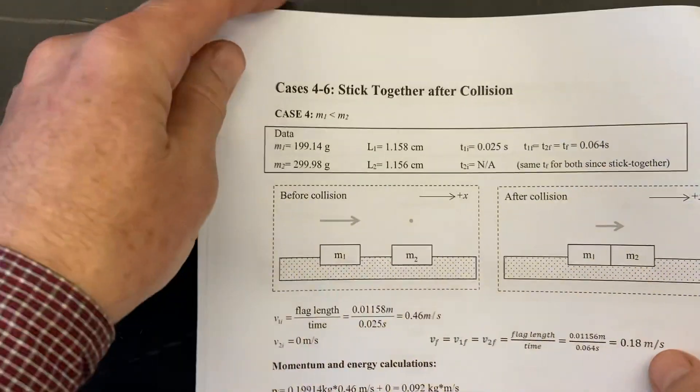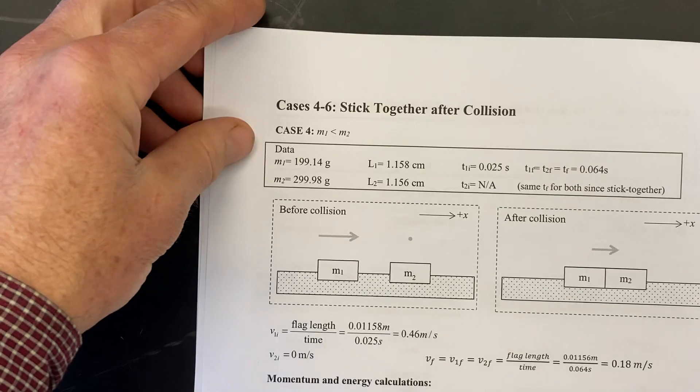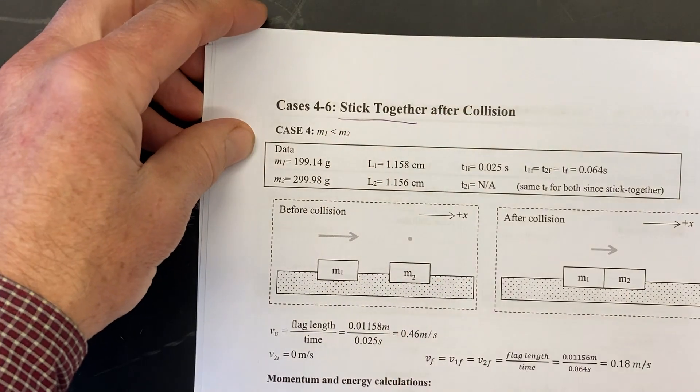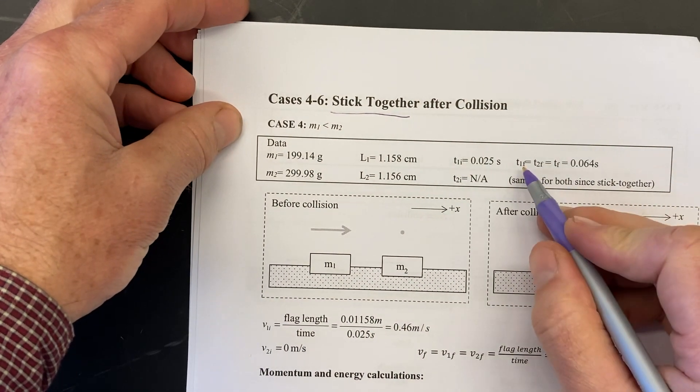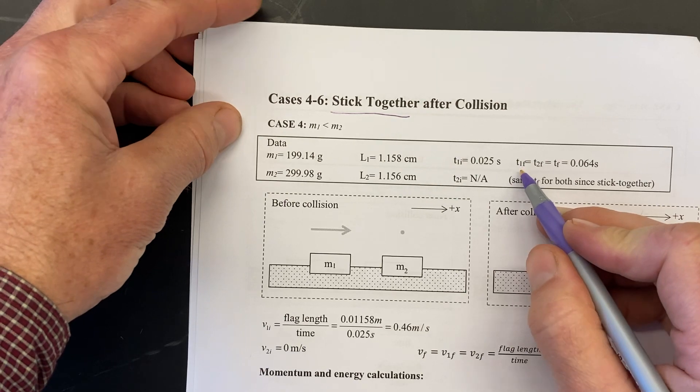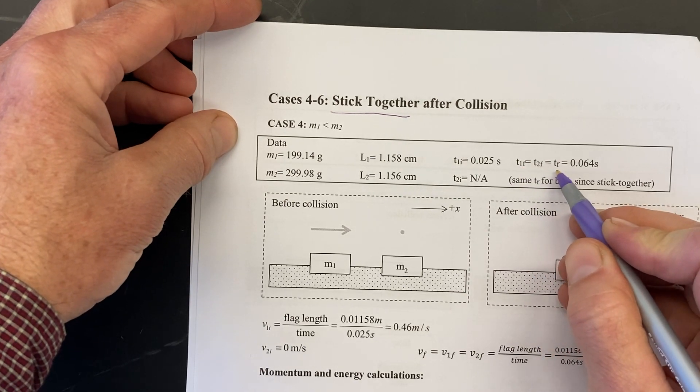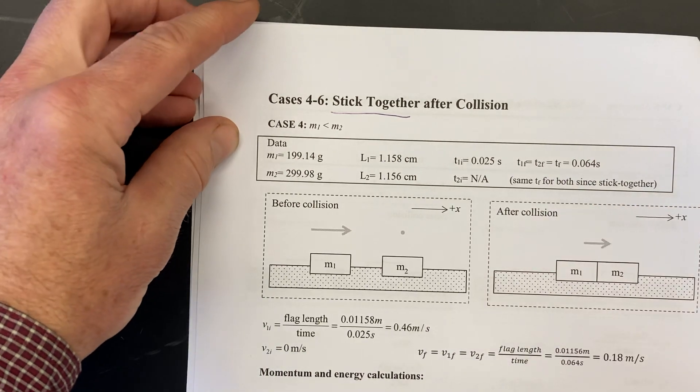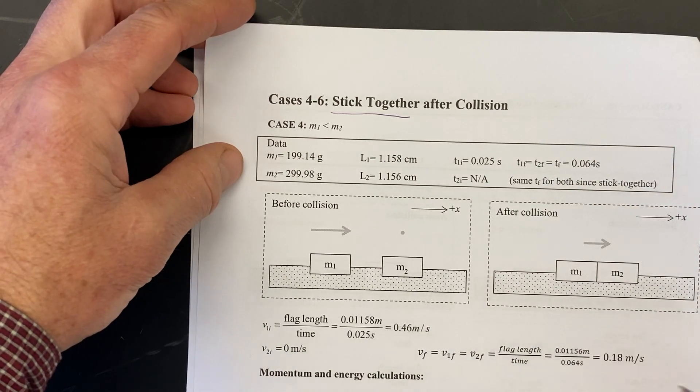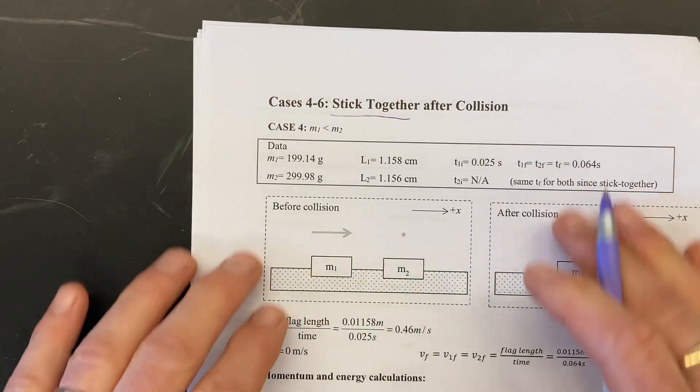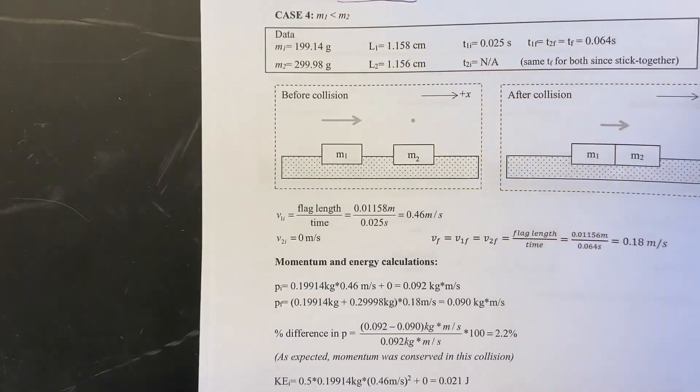Case four is one that's been totally done for you but this is a stick together collision and so this is when they stick together it's perfectly inelastic so t1f equals t2f equals tf and this will also make the calculations easier. Okay so this goes through the full calculations there.